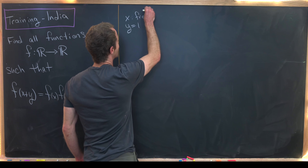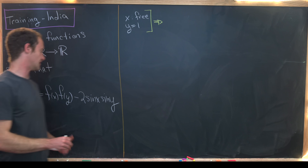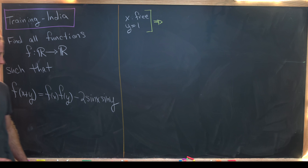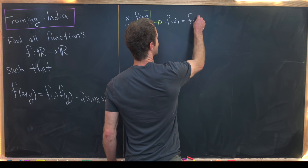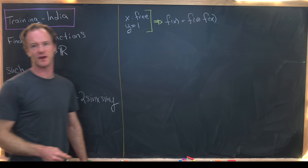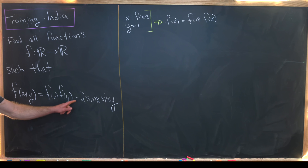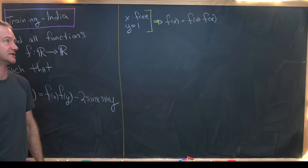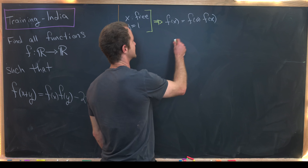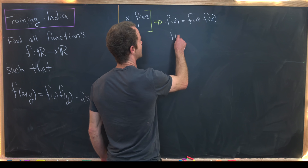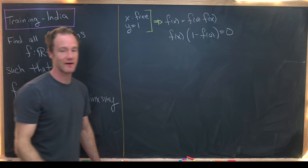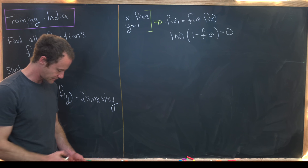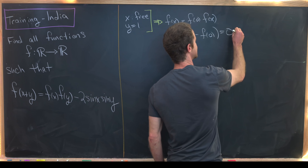With that setup, our given functional equation turns into f(x+0) = f(0)·f(x) − 2·sin(x)·sin(0). But sine of zero is equal to zero, so that simplifies nicely. This means that f(x)·(1 − f(0)) = 0, just by moving everything to one side and factoring. That gives us two distinct possibilities.